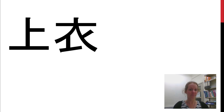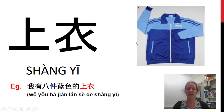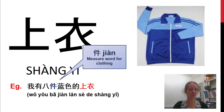这是什么? 这是上衣. So this isn't necessarily a jacket — it's generally a top, anything that you wear on the top half. It could be a light sports jacket or just a nice top. For example: 我有八件蓝色的上衣. 件 is a measure word for most clothing items. 我有八件蓝色的上衣.